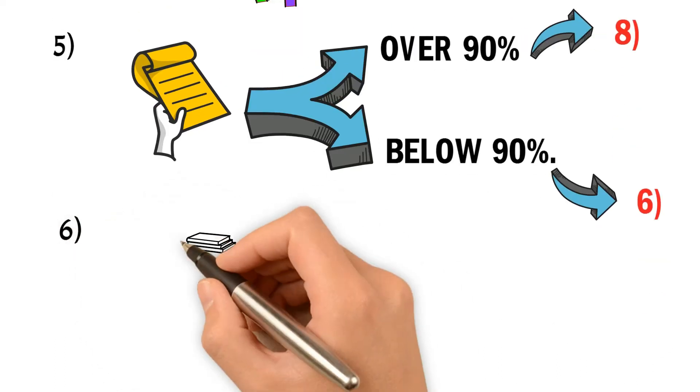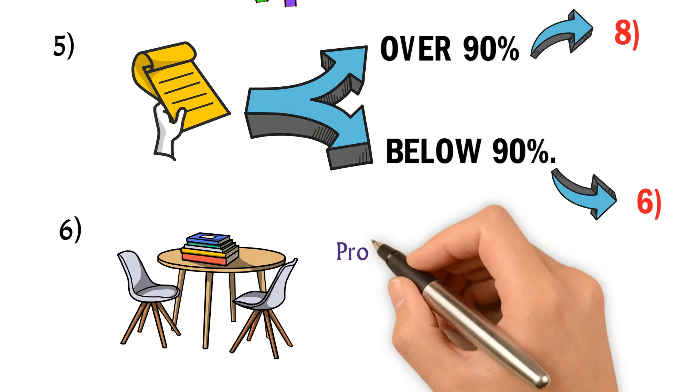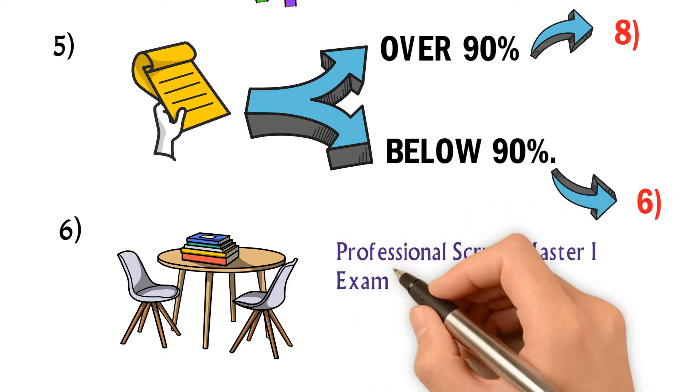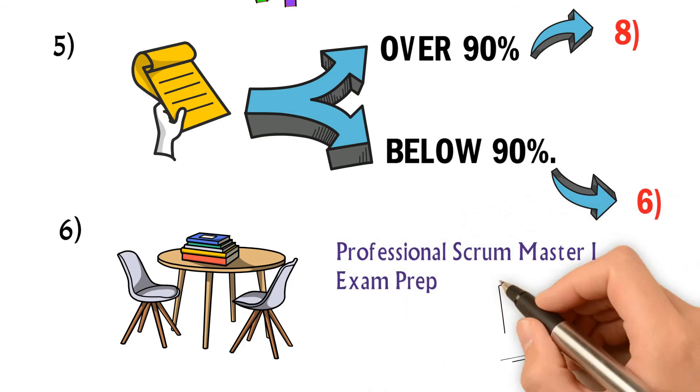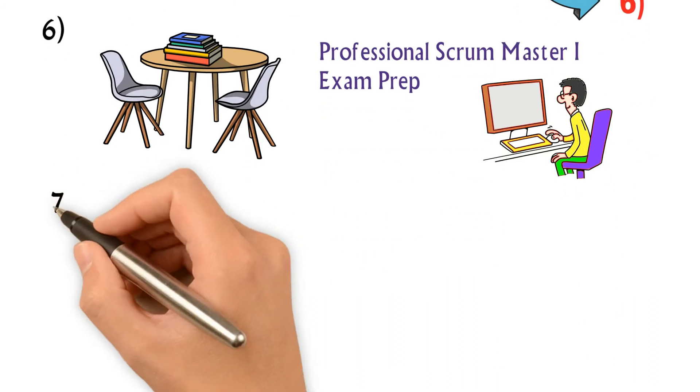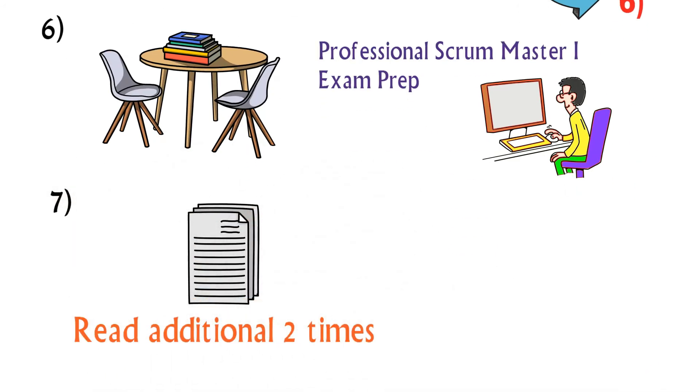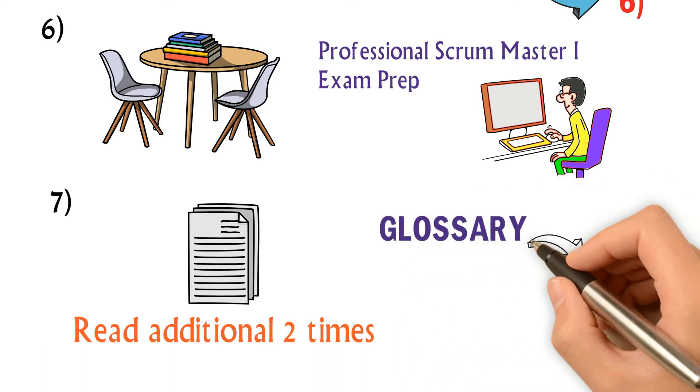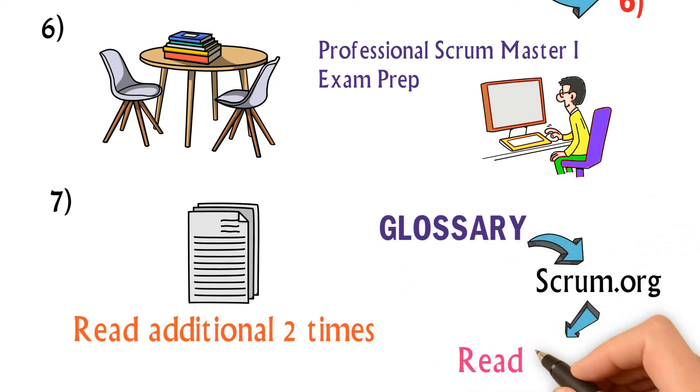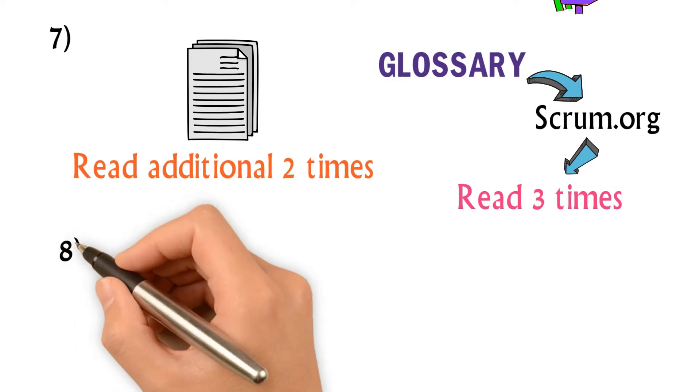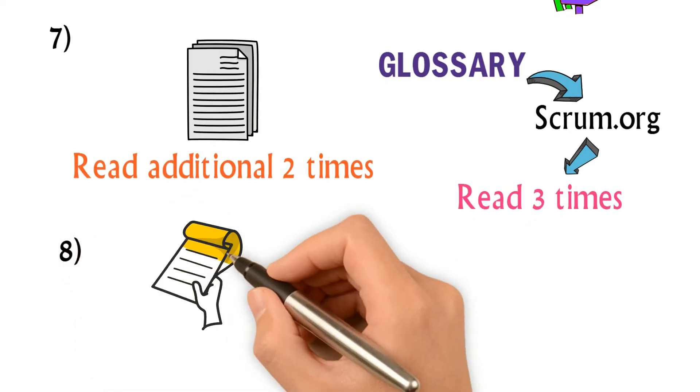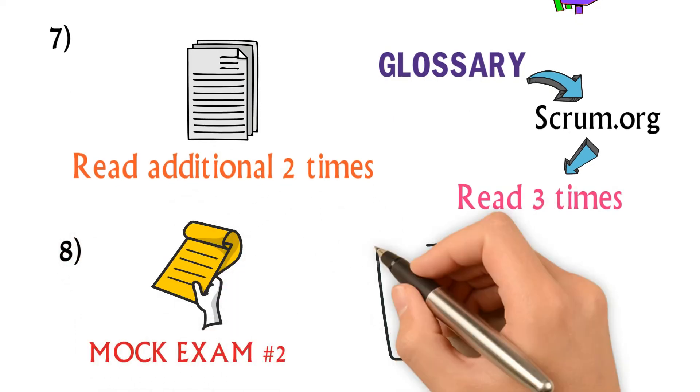Six, read slides in Professional Scrum Master 1 exam prep PowerPoint presentation in this training course. Seven, read the Scrum Guide for additional two times. Read glossary in Scrum.org three times. Eight, take mock exam number two and you should score over 90% by now.